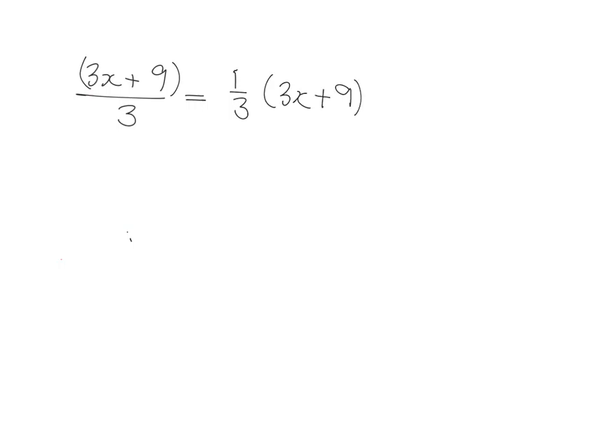Now we've just been working with this, so we know that multiplication distributes over addition. So we've got to do one-third times 3x and one-third times nine. So one-third times 3x plus one-third times nine. And so this becomes 3x over 3 and this one becomes 9 over 3.